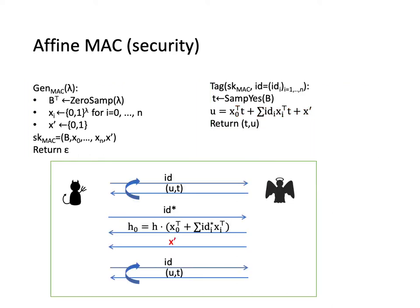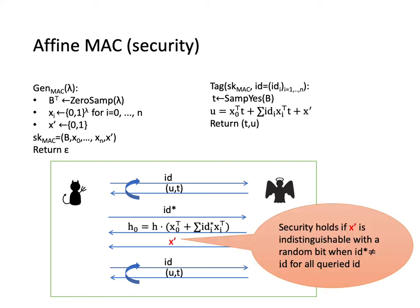In the security game, the adversary queries messages and obtains the corresponding tags. At some point, it makes a challenge query id* and obtains a token, which consists of h₀ and x'. x' is part of the secret key and h₀ is also computed by an affine equation. Security holds if x' is indistinguishable with a random bit when id* is not equal to all the queried messages.